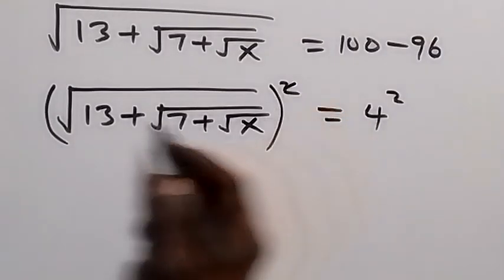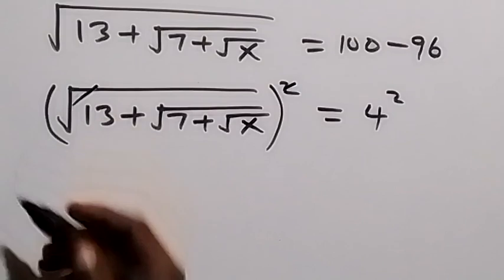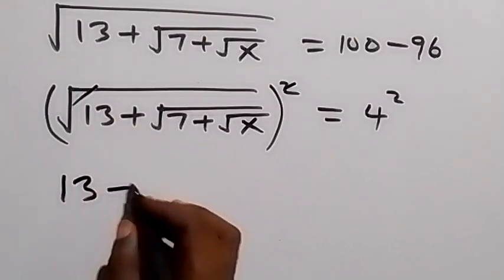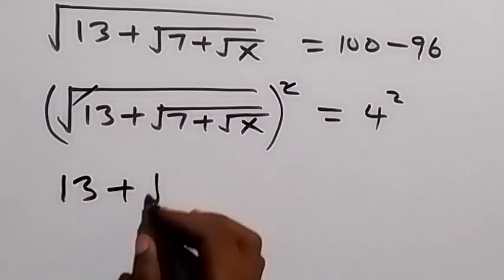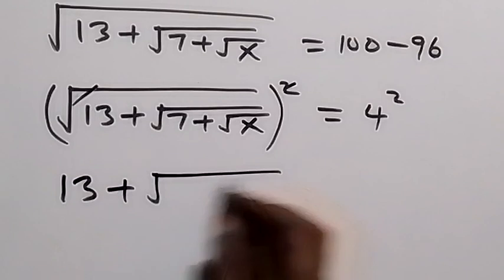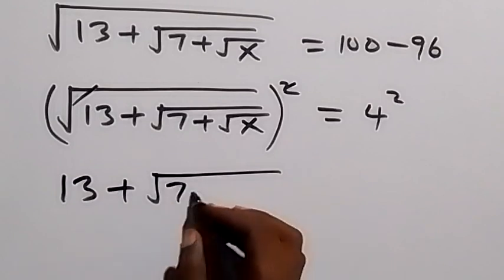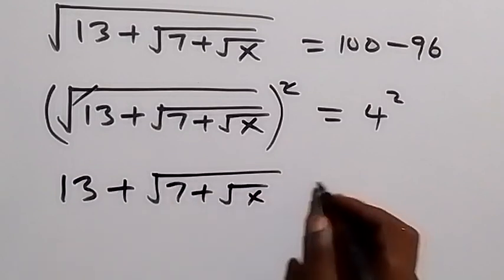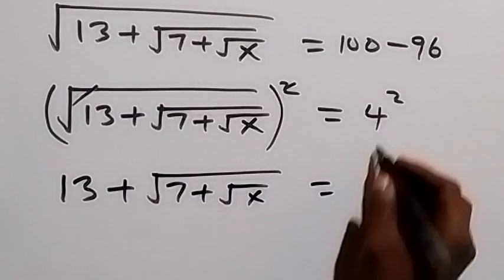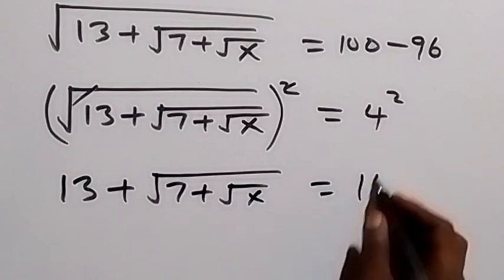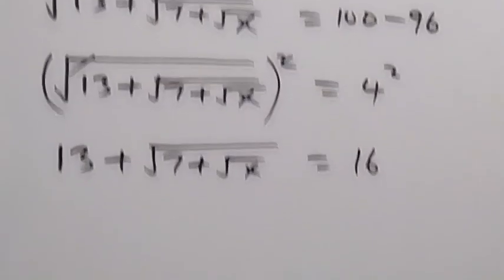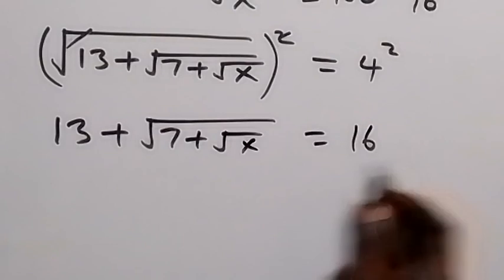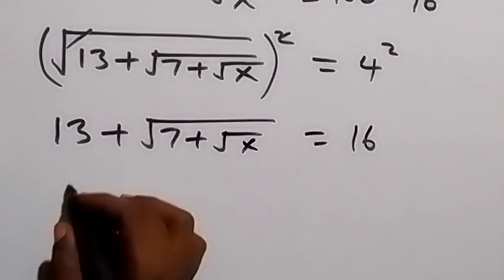Squaring both sides cancels the square root, so we have 13 plus square root of 7 plus square root of x, which equals 4 squared, that's 16. From here we take 13 to this side again.